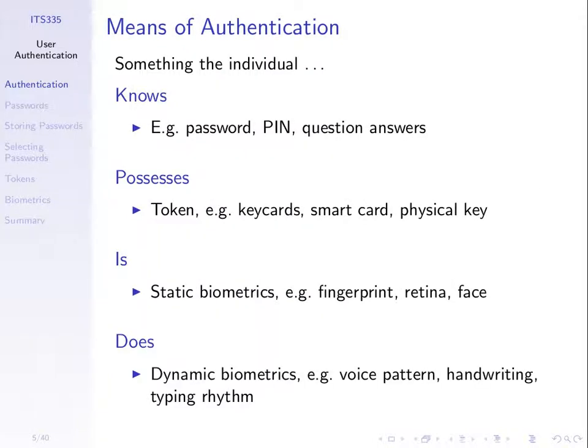There are roughly four different ways to authenticate people. First: something the person knows — passwords, PINs, answers to questions. In theory, only I know my password. If I supply it to the computer system and it matches the previously stored password, the system takes that as proof that the person trying to access is who they say they are. We'll focus mainly on this category, but we'll see a few examples of others as well.